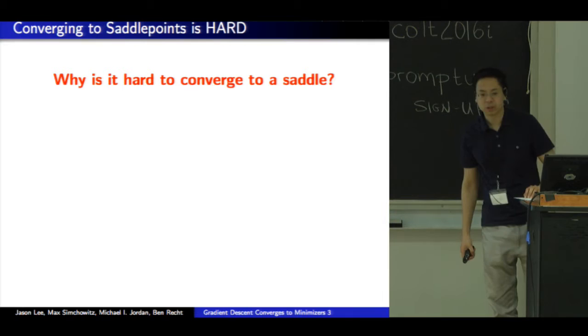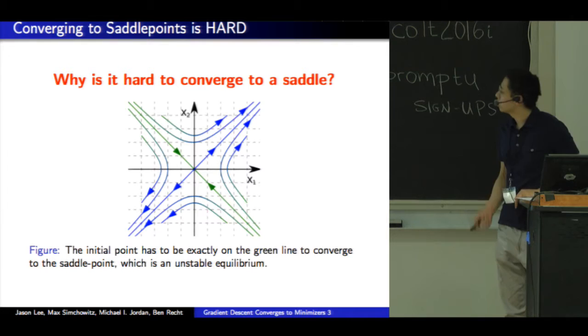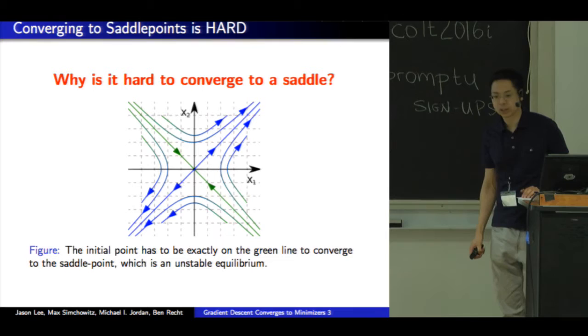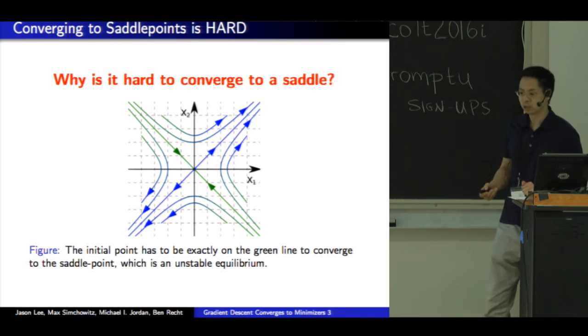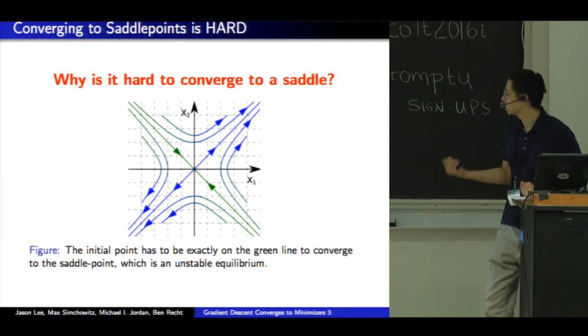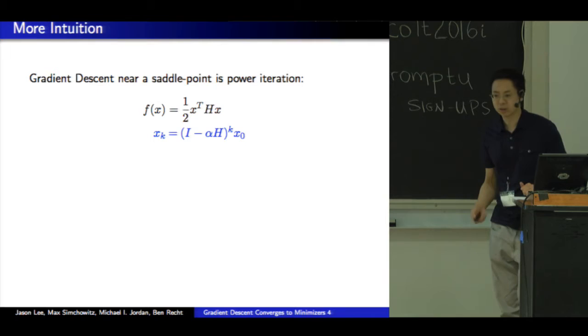So first some intuition. Why is it hard to converge to a saddle? Let's look at a plot of the gradient vector field around a saddle point. You'll quickly see that zero is the saddle point. And the only way to converge to the saddle point is if you initialize exactly on the green line. If you initialize anywhere else, you would get maybe close to the saddle point, but eventually leave. So at least in this picture, it's a set of measure zero where we converge to the saddle point.